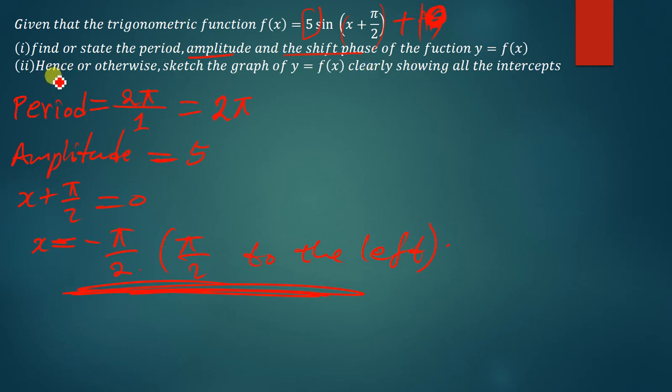So this question, the other question is asking us to sketch the graph. So how do we sketch the graph of this function? It's very simple since we have the amplitude already, the period, and the vertical shift. So sketching the graph becomes simple. So I'm going to draw this. So after drawing that, I'll put the amplitudes.